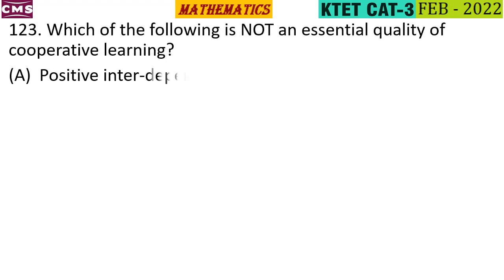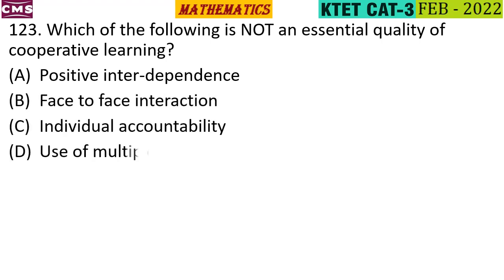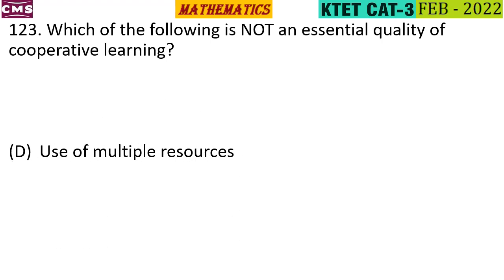Which of the following is not an essential quality of cooperative learning? The options are: positive interdependence, face-to-face interaction, individual accountability, and use of multiple resources. The correct answer is option D — use of multiple resources.